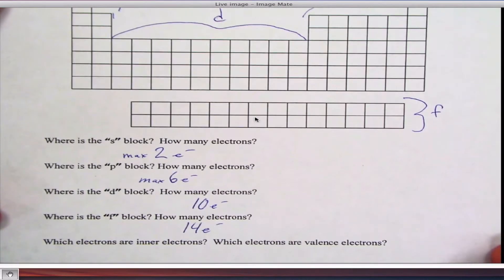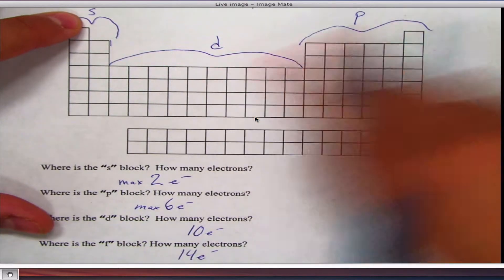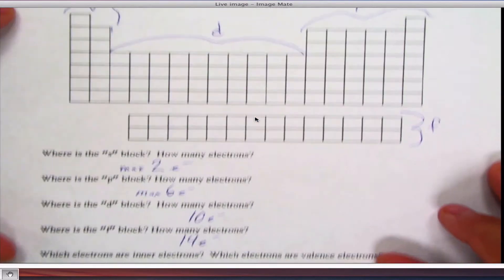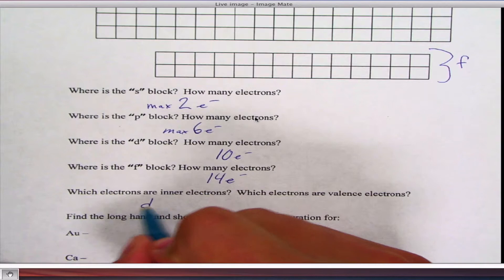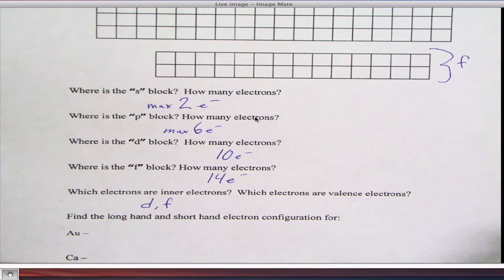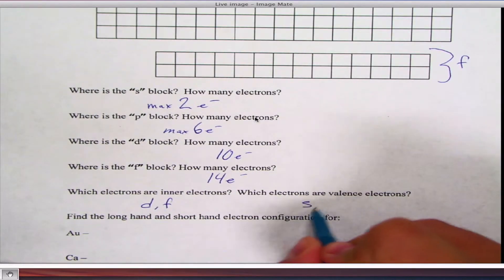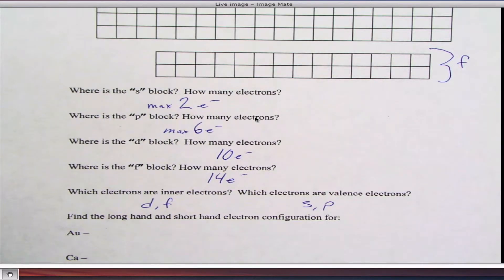So there's different areas where the electrons can be. The S block, the D block, the P block, and the F block. Some are inner level electrons, in other words, they're close to the nucleus. And some are outer level electrons, which are called valence electrons. The inner level electrons are going to be in your D and F blocks. The outer level are going to be in your S and P blocks.